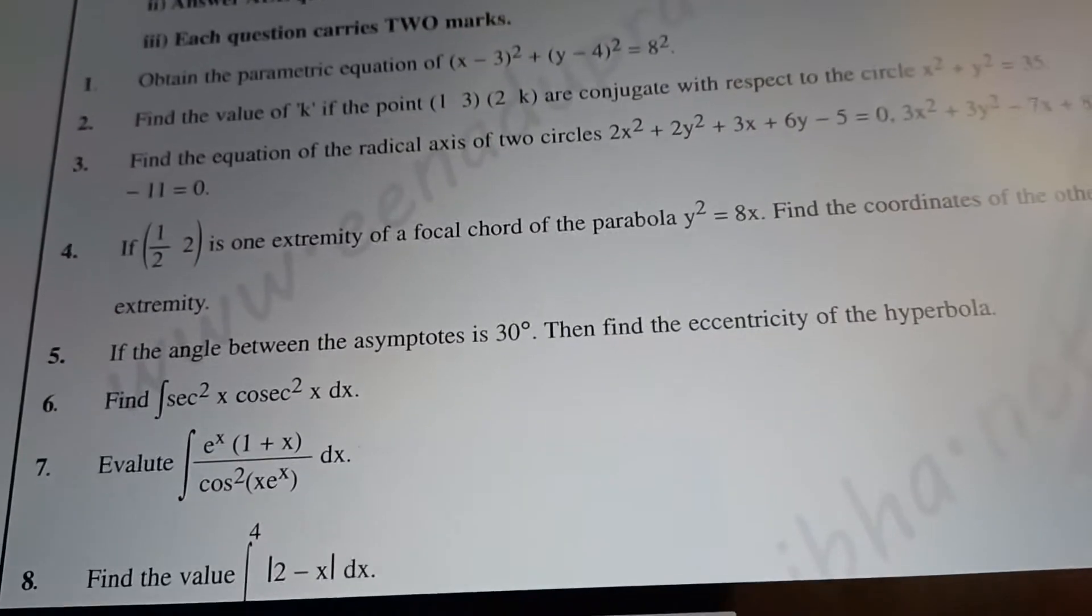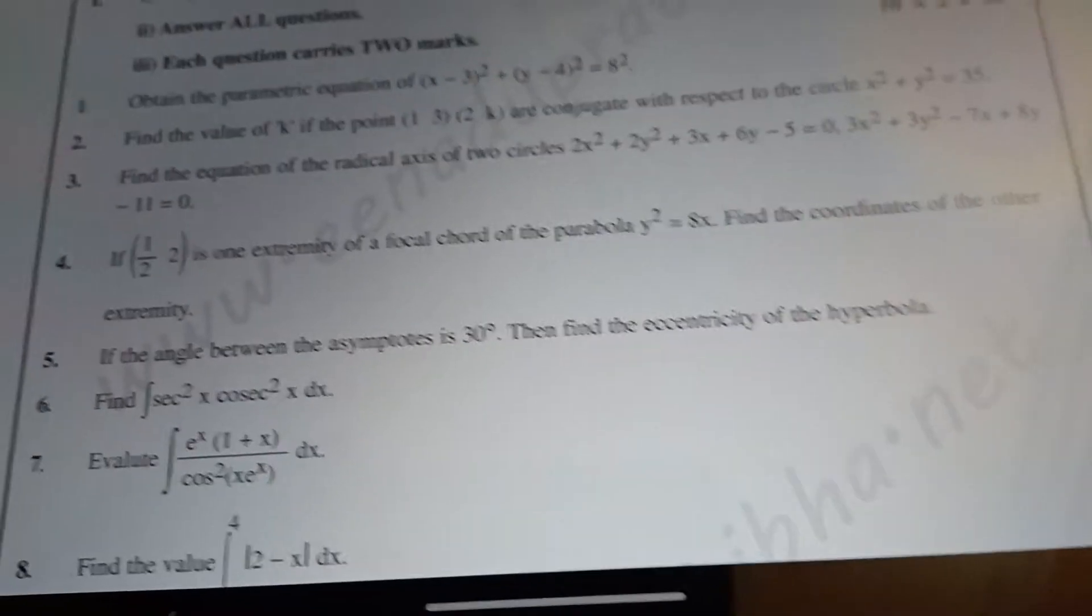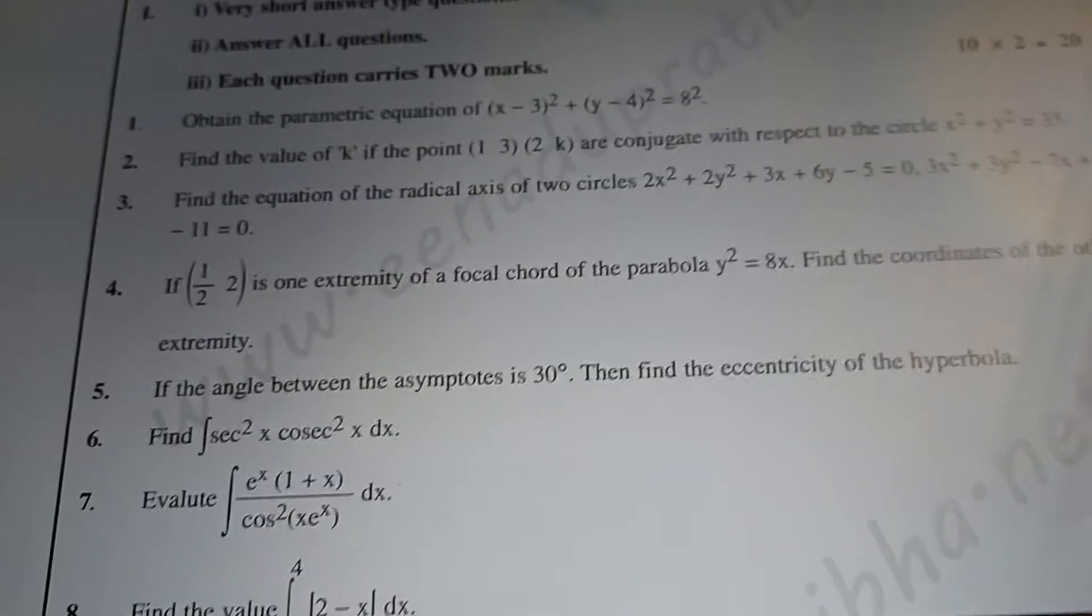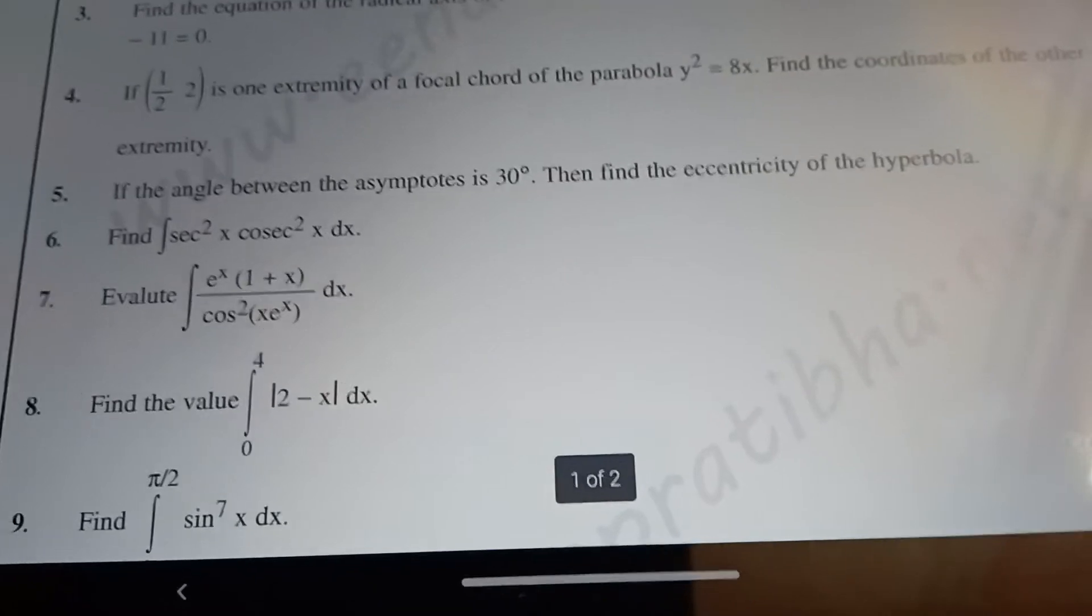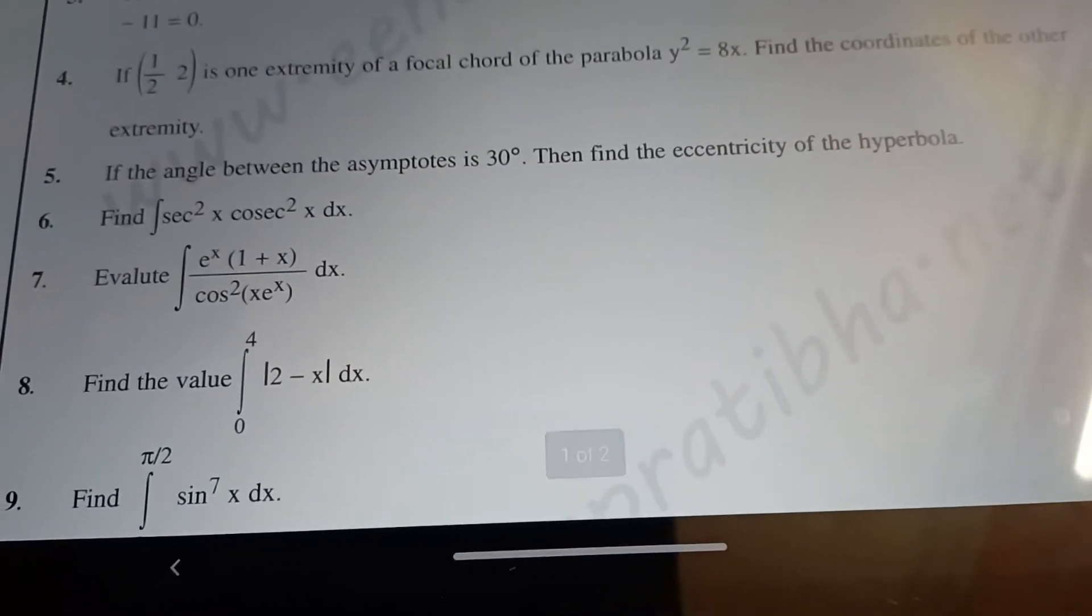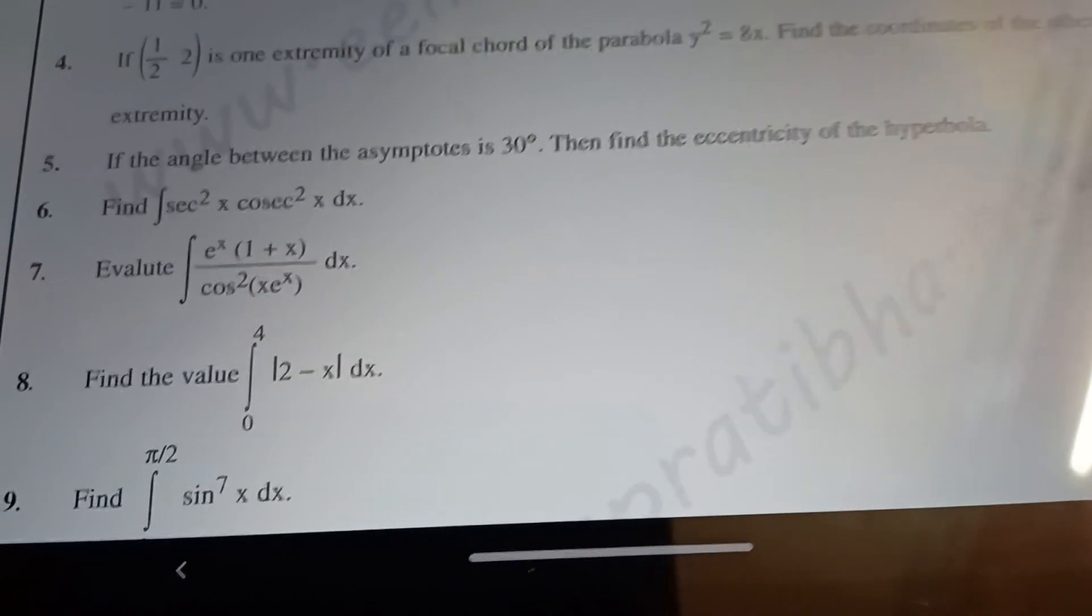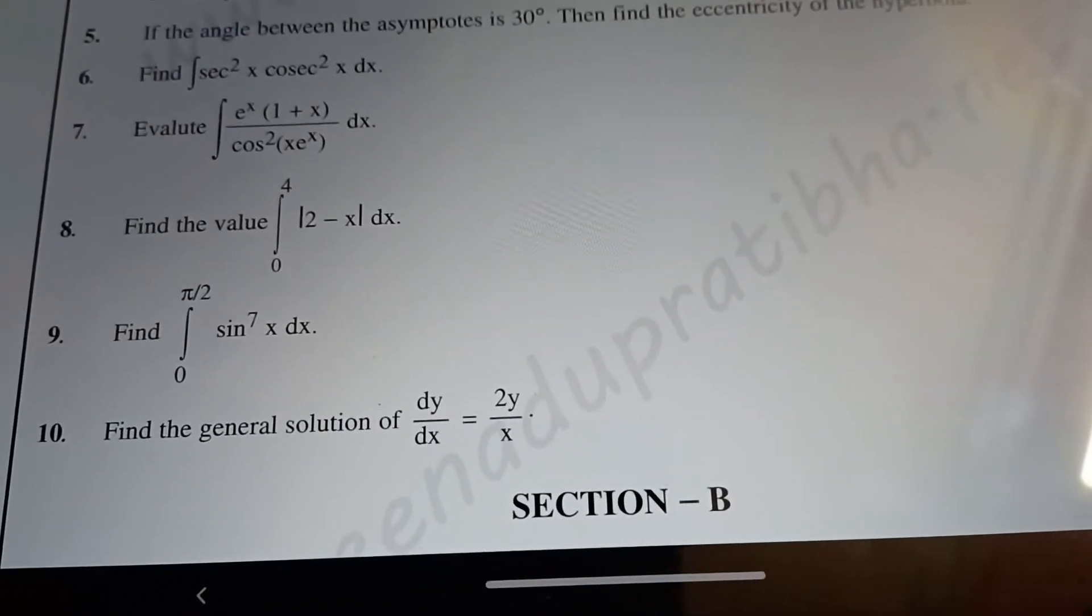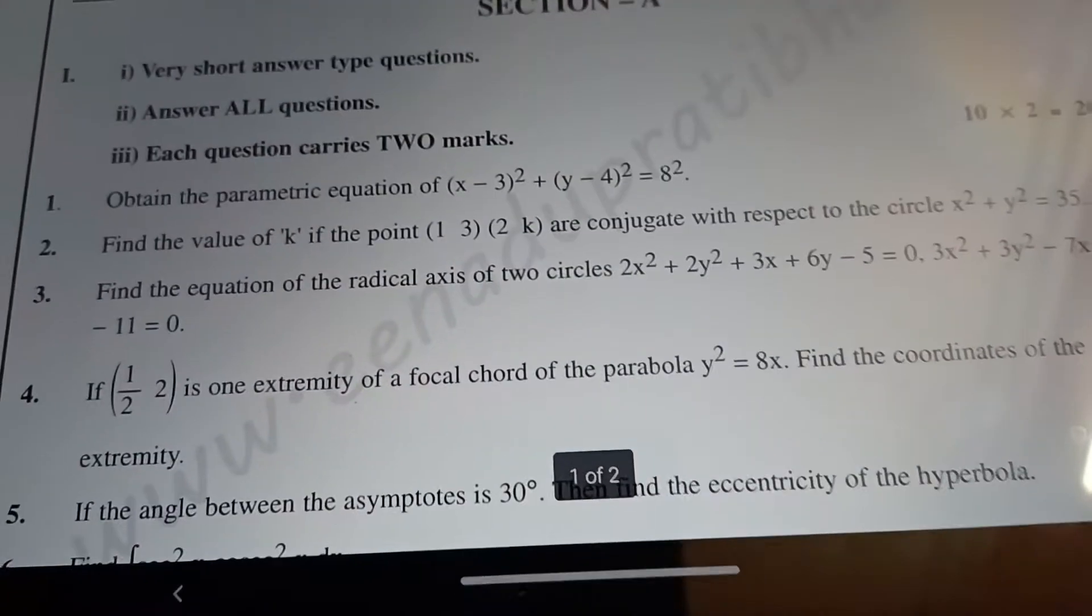Next, integration. Secant square X, cosine square X, dx. Integrations in the textbook. Integration of 0 to 4, modulus of 2 minus X dx. 0 to pi by 2, sin power 7 x dx. Find the general solution of dy by dx equal to y by x. This is section A, two mark questions. Next, section B.